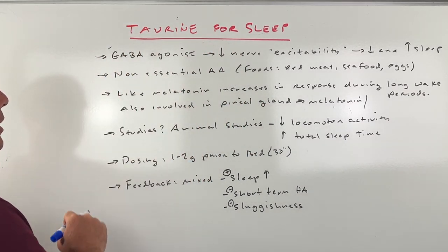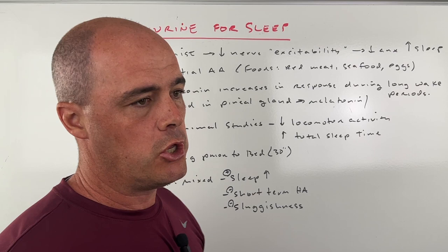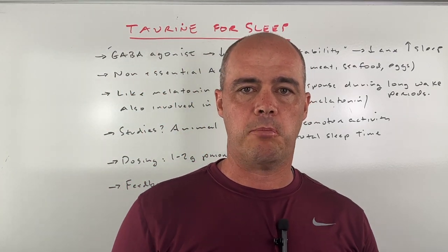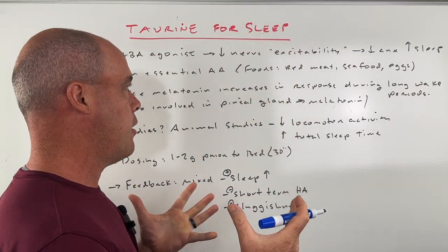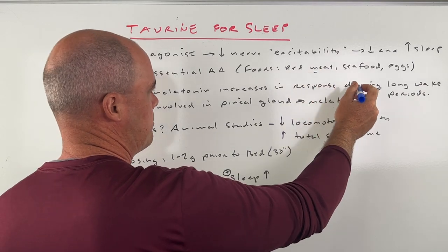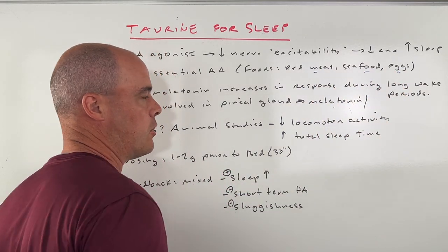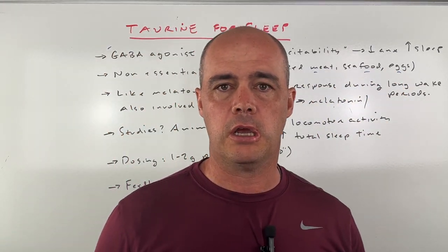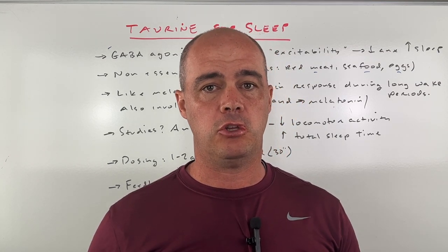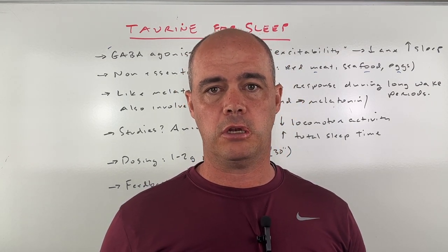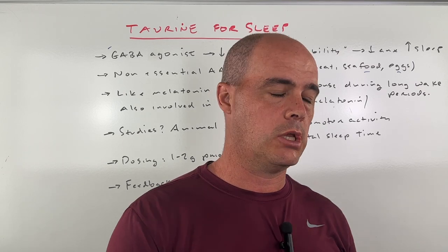Now we talked about the non-essential amino acid part. You can get it from foods. It's primarily going to be found in animal foods like red meat, seafood, and eggs. For example, if you're a vegetarian, you are at risk for a taurine deficiency, which is not good.